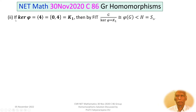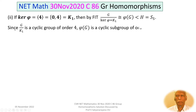Now take case 2: ker(phi) equals K1, generated by 4, with elements {0, 4} of order 2. By the first isomorphism theorem, G by K1 is isomorphic to phi(G), a subgroup of H equals S5. G by K1 has order 8 divided by 2, which is 4 — a cyclic group of order 4. So phi(G) must be a cyclic subgroup of order 4 in S5.